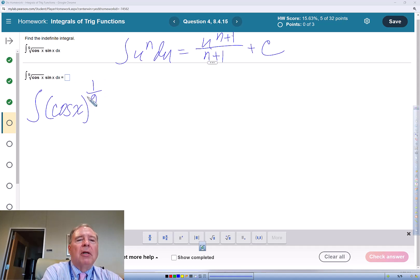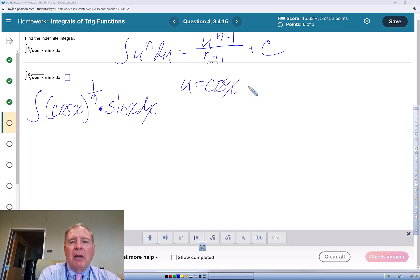switch to fractional exponent notation instead of radical notation, times sine of x dx. So we're going to use u substitution. So the thing that's inside another function, our u, is cosine of x.